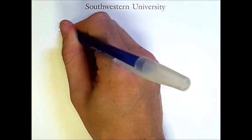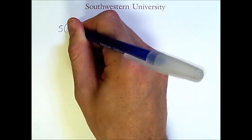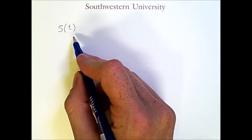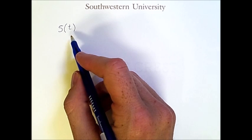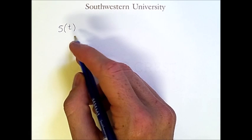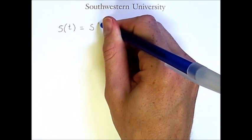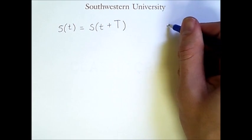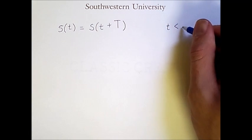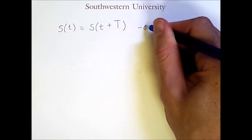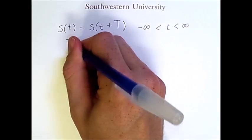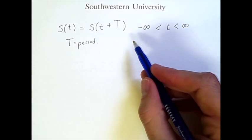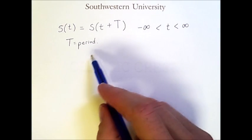If we have S be the function for some signal over time, this means the output of this function will be the voltage level of the signal for any given time. Then a signal is periodic if this is equal to S applied to little t plus big T for all values of t, less than infinity and greater than negative infinity. So what is this big T? Well, this big T is the period.